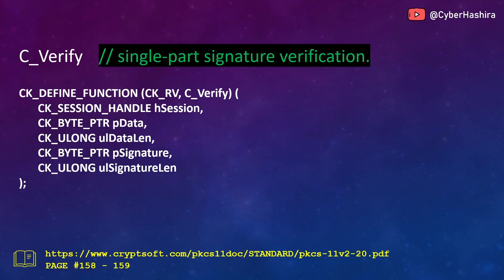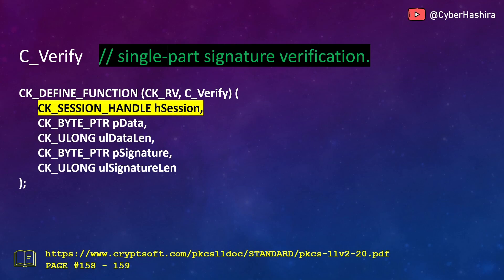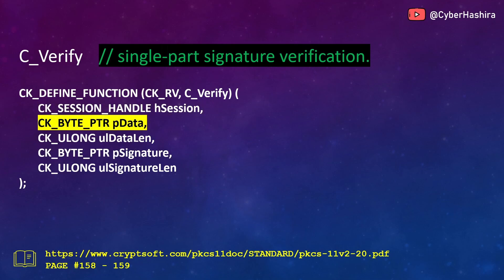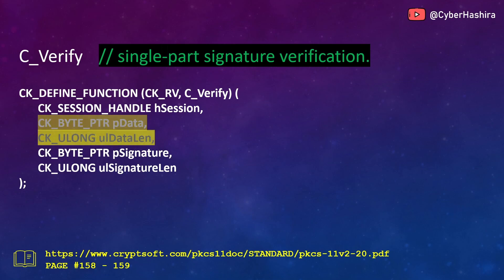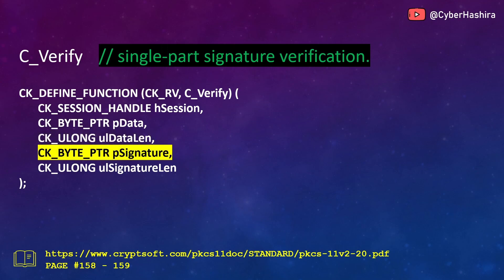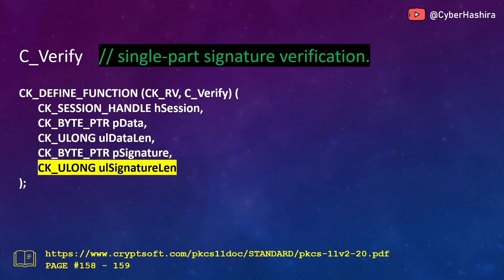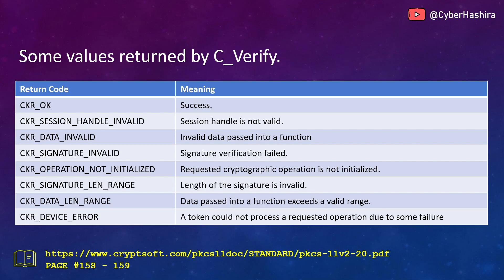The C_Verify function is used for verifying the signature of small data, also known as single-part verification. It requires five arguments: a session handle number, the location of the data that needs to be verified, the length of that data, the location containing the signature, and the length of that signature. More information about C_Verify is available on pages 158 and 159.